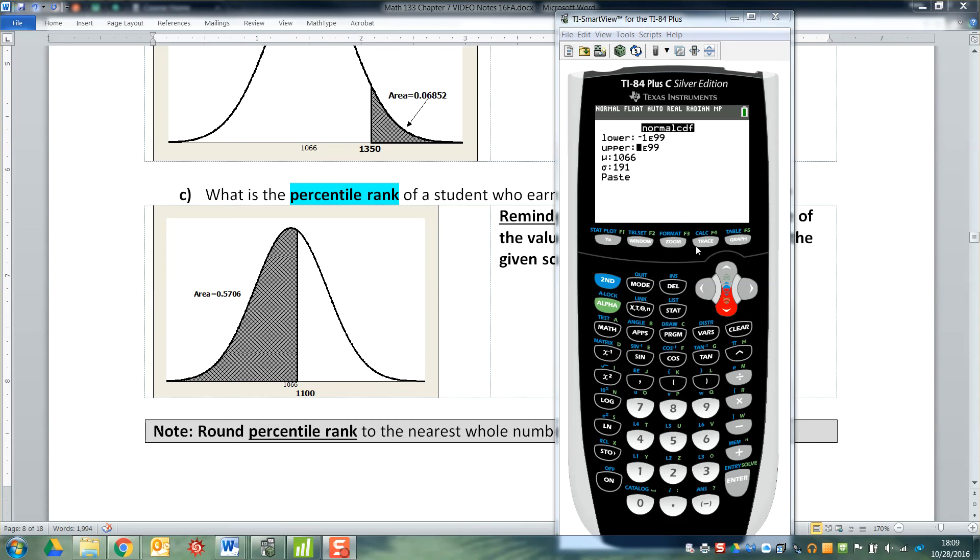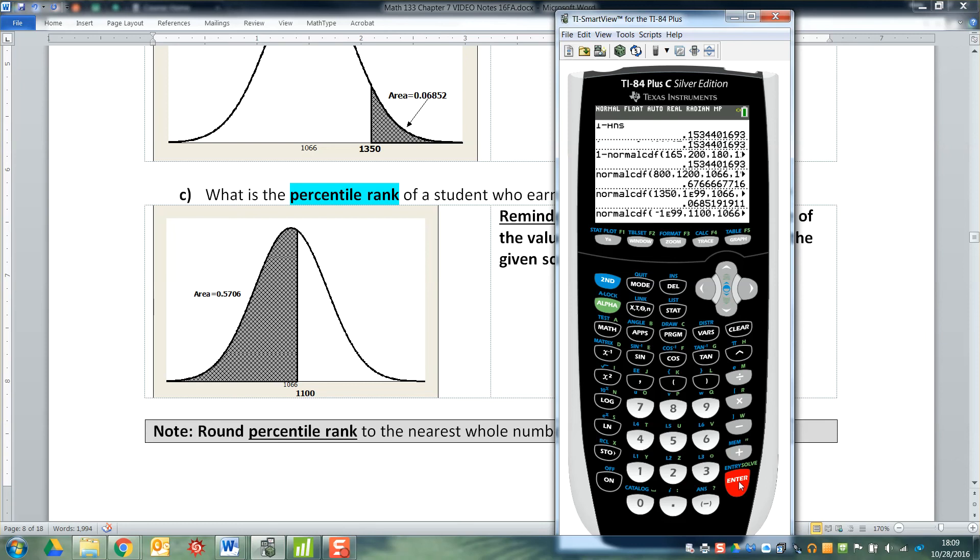All right. Now my upper bound is where I stop, where my shaded area stops. And yes, you do have to shade these areas. Everything that I'm drawing on this picture over here, you draw and label and shade. So I would have to put in 1100 because that's where my right hand edge of my shaded area, 1066 and 191 haven't changed. So I'm going to paste them in. I'm going to press enter.